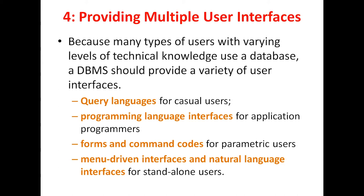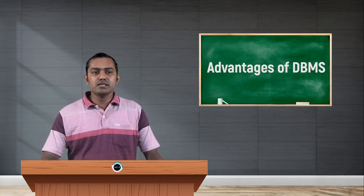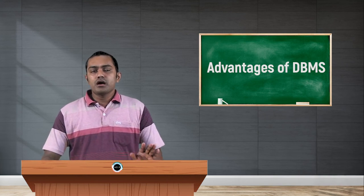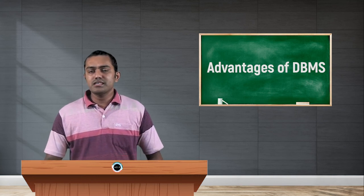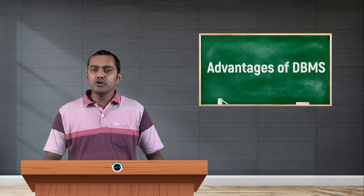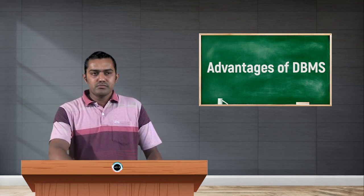Next, for application programmers — those who are developing applications — we have a programming language interface. Third, we have forms and command codes for parametric users. Those who come under the parametric user category have forms and command codes. Last, there is a menu-driven interface and natural language interface for standalone users. In a file management system, we did not have any interfaces to access, insert, or manage the data. But in the case of a database management system, for different types of users we have different types of interfaces, with which they can easily manipulate, define, create the database, and store details. That is the fourth advantage.